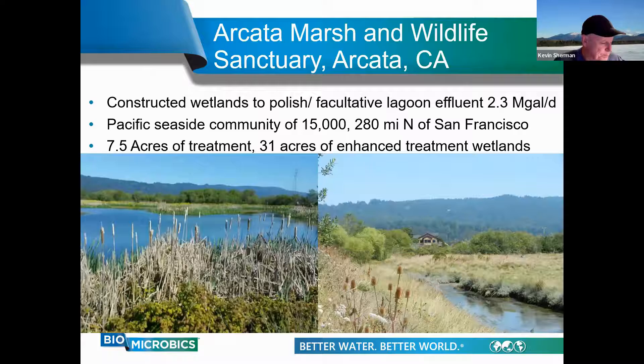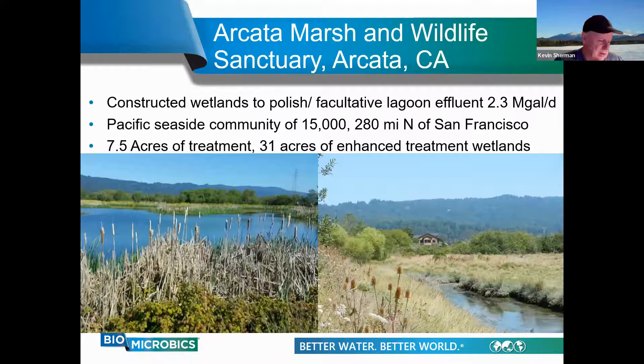Another case study comes from Arcata, California — a seaside community of 15,000 about 280 miles north of San Francisco. An existing facultative lagoon was struggling to keep up with the growing population. The city wanted to decommission the lagoon and install a new upgraded wastewater treatment plant, but the citizens had other ideas. They wound up adding 7.5 acres of constructed treatment wetlands, followed by 31 acres of enhancement wetlands to polish the effluent and remove excessive nitrogen and phosphorus.